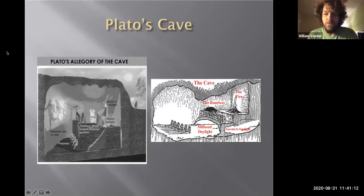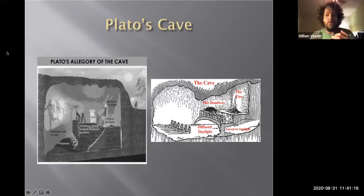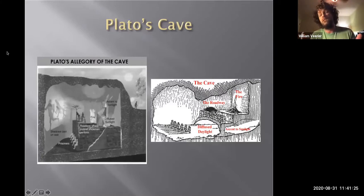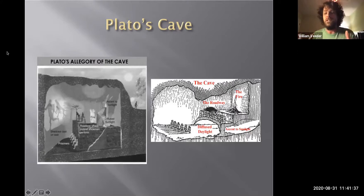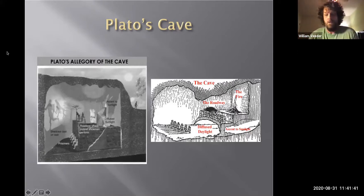For Plato, the person who finds their way outside of the cave is the philosopher — the person who has learned to train their mind in a different way to see truths that are not automatically apparent to everyone else. And philosophers, like Socrates, are often thought to be fools, because they try to convince other people that the reality they are used to is largely illusionary. Let that just sink in for a little while.